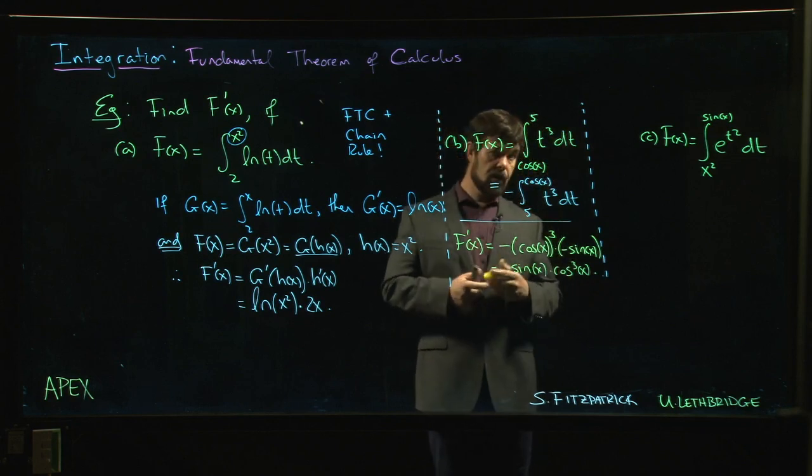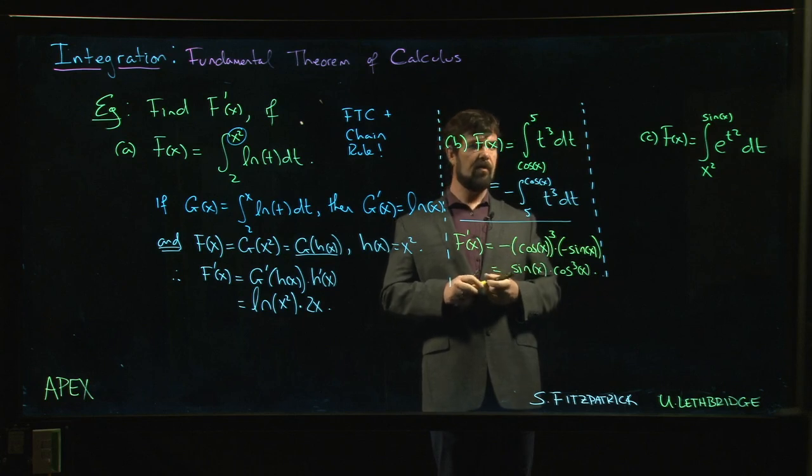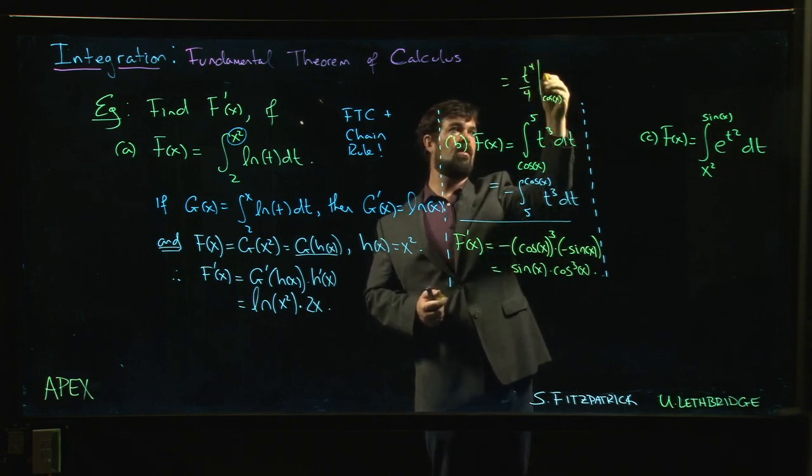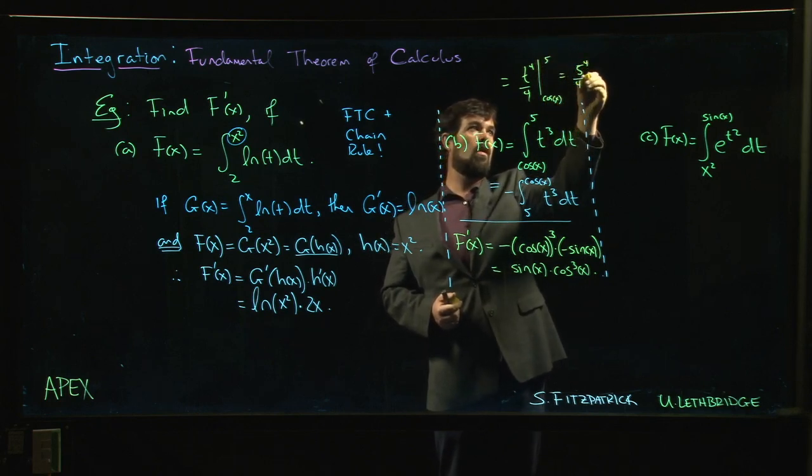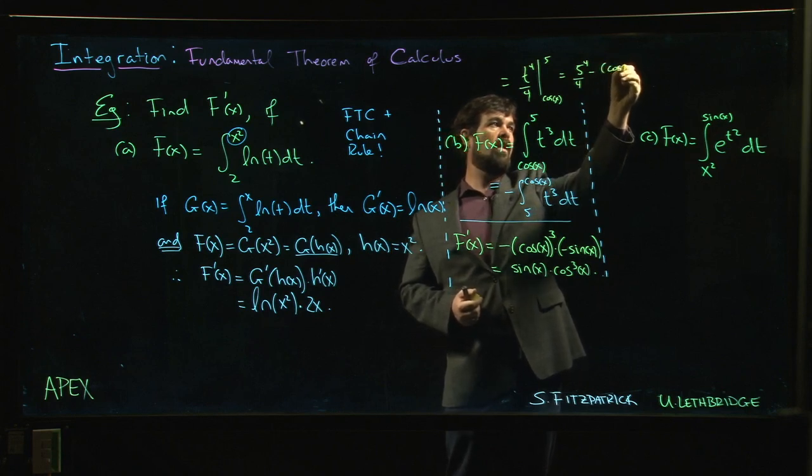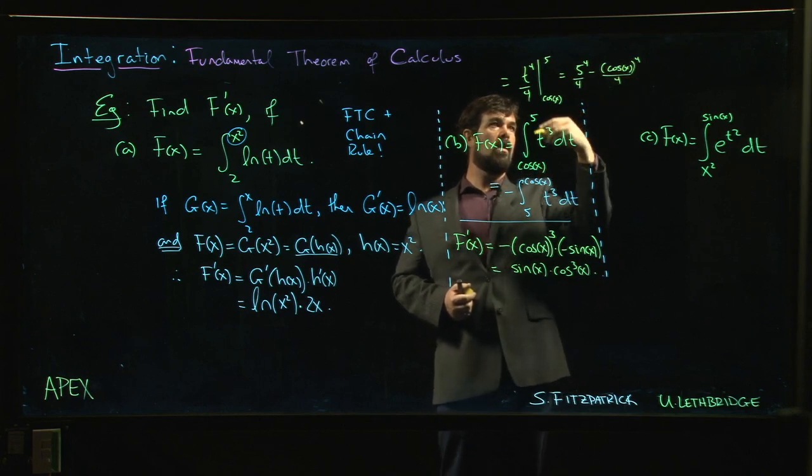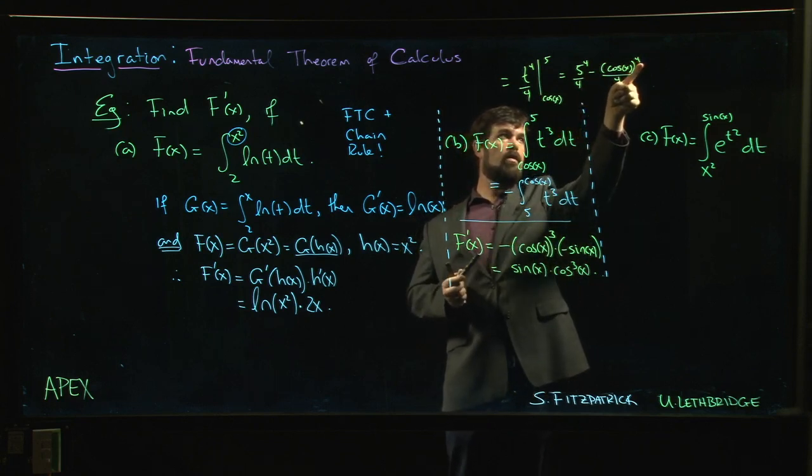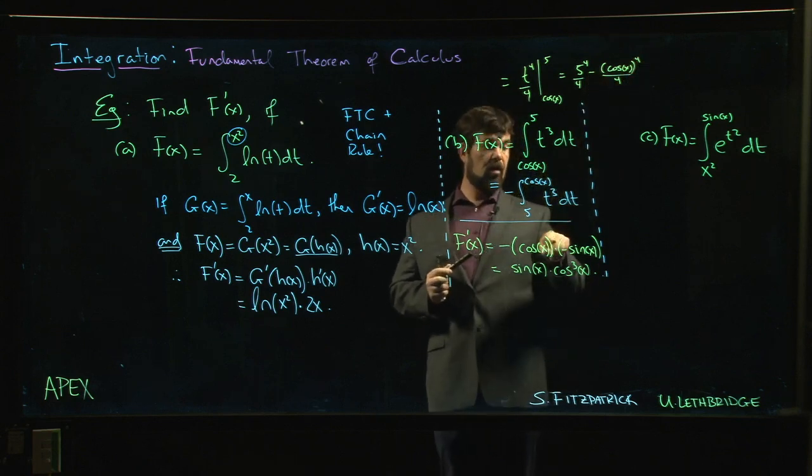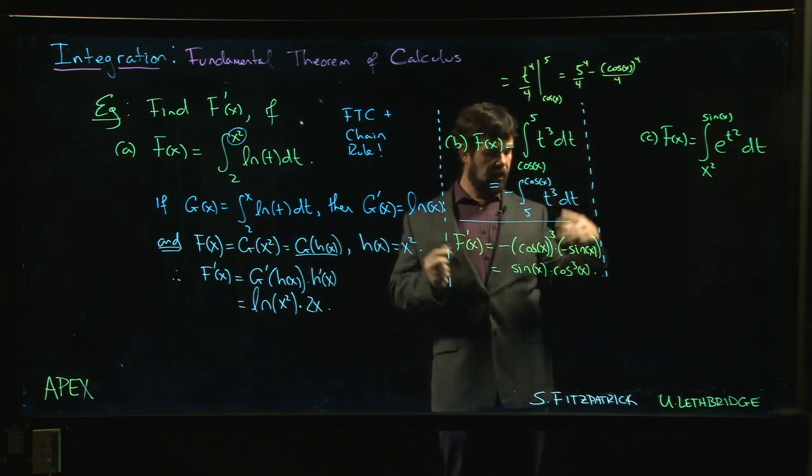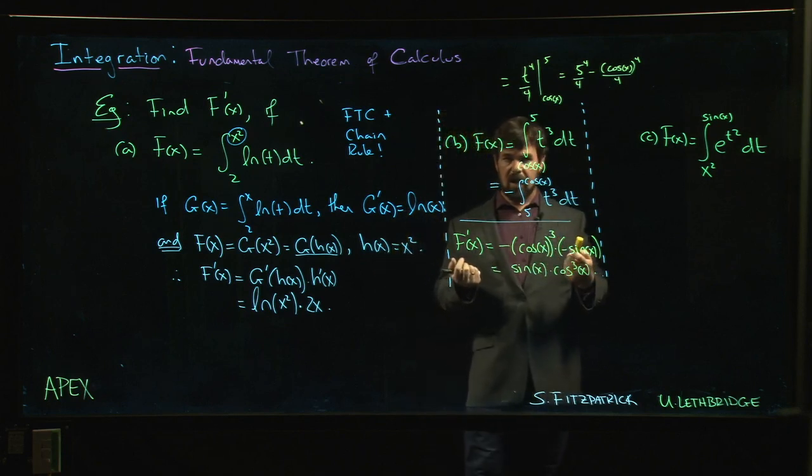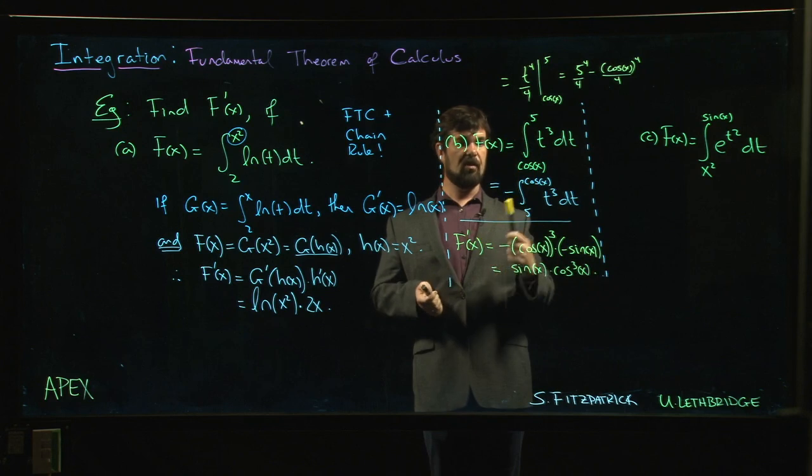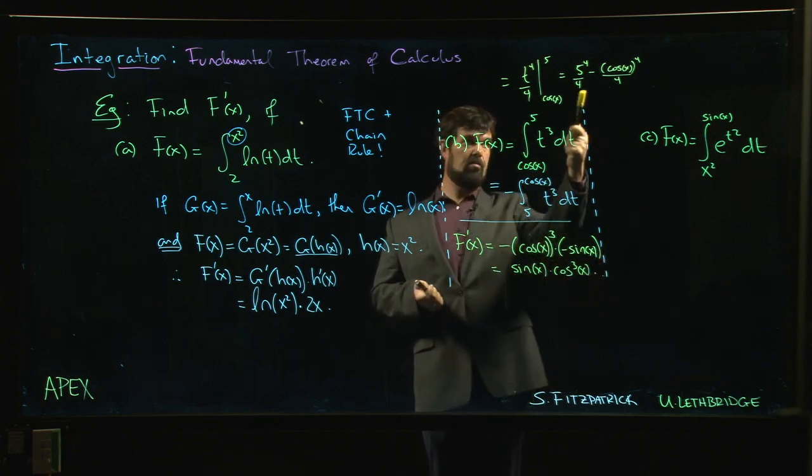Now this is one where, if you really wanted to, you could use the second part of the fundamental theorem of calculus. We could have said, oh, this is just t to the fourth over 4 from cos x to 5. So it's 5 to the fourth over 4 minus cos x to the fourth over 4. Then you take the derivative of that. The derivative of the first part is just a constant. Then the derivative of minus cos x to the fourth over 4: power rule says bring the 4 out front, it cancels with that 4, reduce the exponent by 1 to get 3, take the derivative of the inside to get the minus sign. You get the same result either way. For this one, I suppose you can choose which way you prefer to do it.